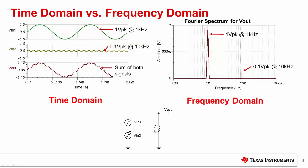In the frequency domain, amplitude is on the vertical axis and frequency is on the horizontal axis. A Fourier spectrum plot shows the amplitude of sinusoidal waveforms versus frequency. In this example, we are analyzing the signal Vout, which is composed of two sinusoidal waveforms.